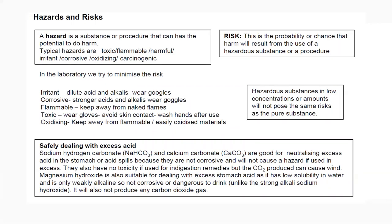Regarding risks and hazards: a hazard is a substance or procedure that has a potential to do harm — for example, something that is toxic, flammable, irritant, corrosive, oxidizing, or carcinogenic. Risk is the probability or chance that harm will result from use of a hazardous substance or procedure.